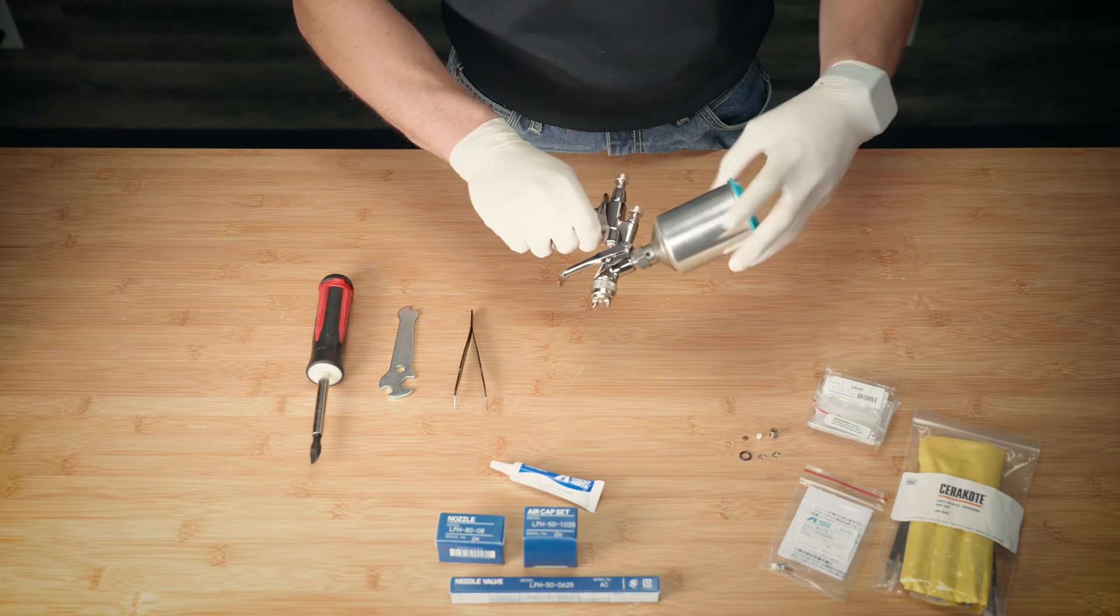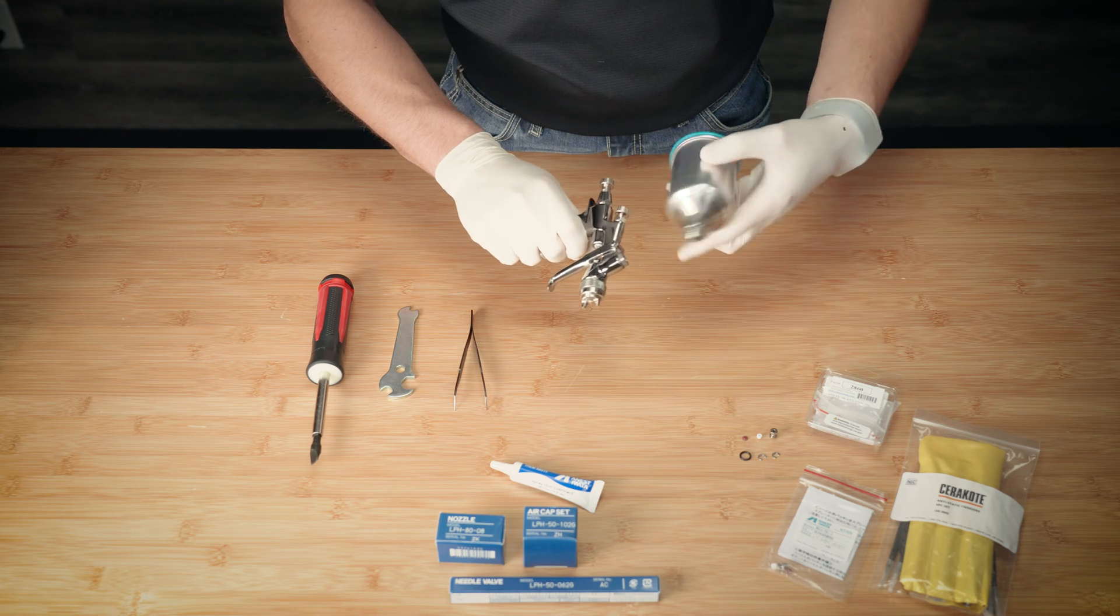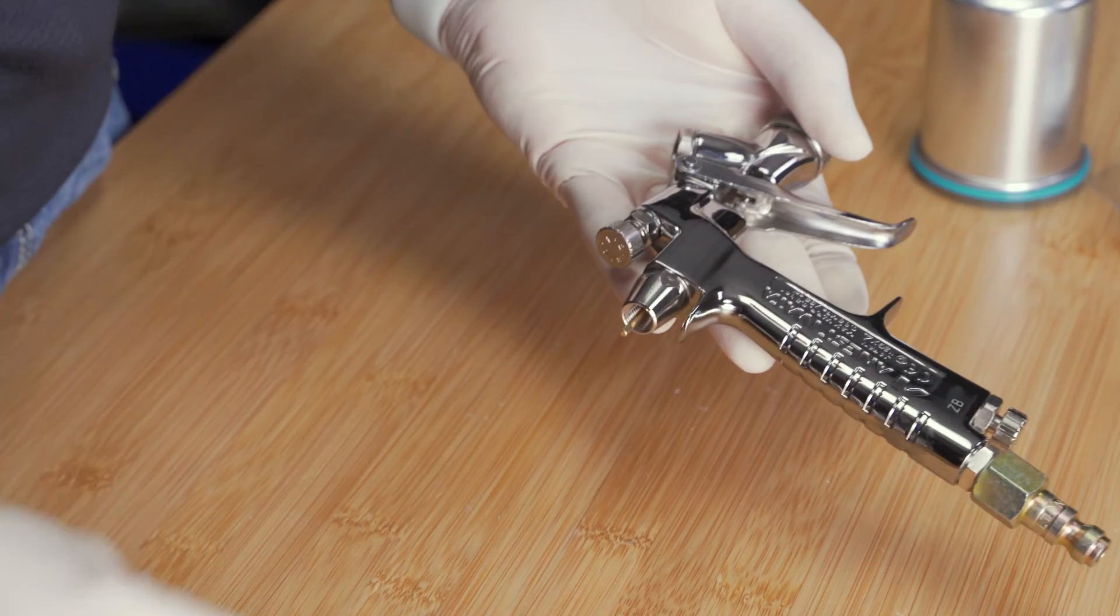Begin by unthreading the spray gun cup. This is not necessary, but does help when removing the rest of the components. Remove the spray gun fluid adjustment knob and the needle.